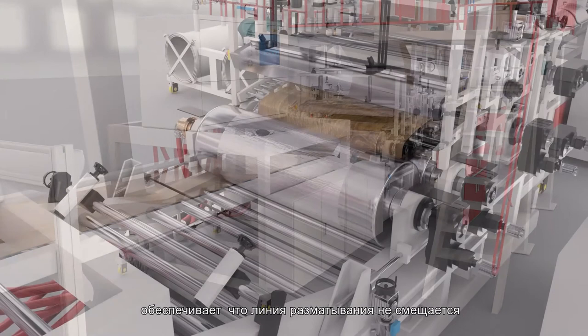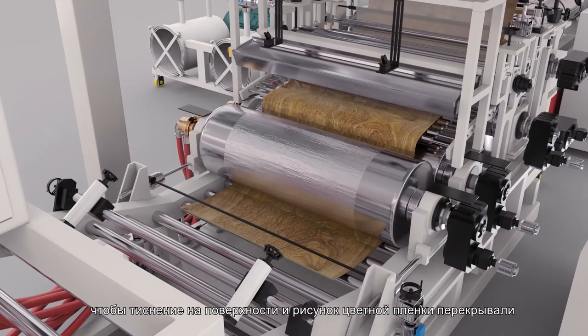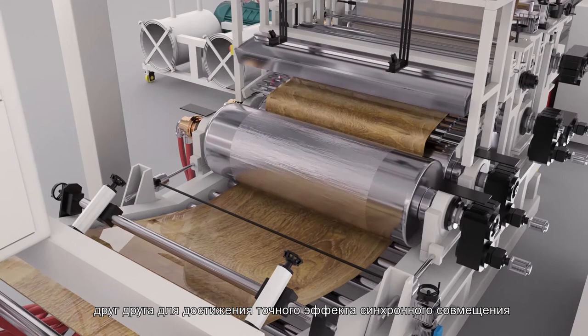Synchronous registration system combines high-speed operation module with edge alignment system to make the surface embossing coincide with the color film pattern, so as to achieve the precise alignment and effects of synchronous registration.